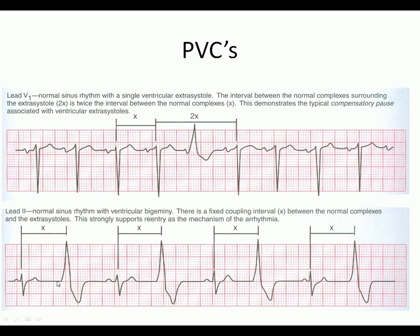Down here on the bottom strip, these are ventricular bigeminy. We have a normal P, QRS, T — and then this oddball-looking complex that is not normal. Look how thin our normal QRS is — about two or three boxes — compared to this wide PVC which spans about ten boxes, or 0.2 seconds. That's not normal. Bigeminy is the pattern of one normal QRS followed by one PVC, then one normal, one PVC, et cetera.